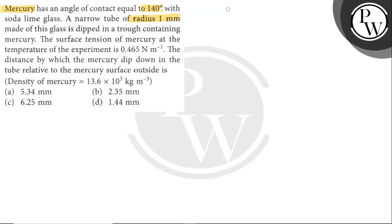The surface tension of mercury at the temperature of the experiment is 0.465 newton per meter. We need to find the distance by which mercury dipped down in the tube relative to the mercury surface outside.